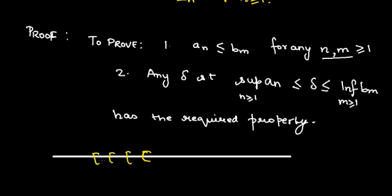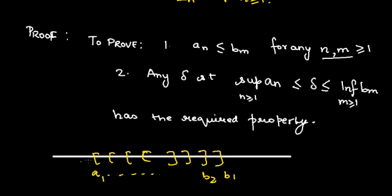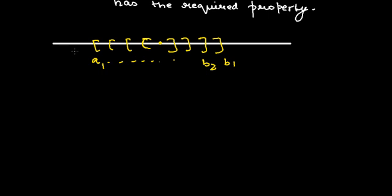All the A's are here and all the B's are here. So A1 is less than B1, A1 is less than B2 also, AN is less than B3 and it will be less than BM. Secondly, if we can find a delta which lies between the supremum of AN and the infimum of BN, that will satisfy our hypothesis and prove that there will be a common point. Let's try to do that mathematically.